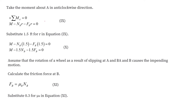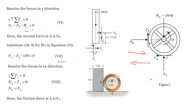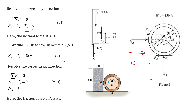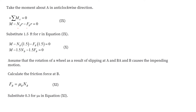Now taking the moment about point A in the anticlockwise direction. Considering anticlockwise moments as positive and clockwise as negative: the applied moment M minus Nb·R — the moment due to Nb at point A is clockwise — and the moment due to friction force Fb is also clockwise. From this we get a relation between the moment M, the normal reaction Nb, and the friction force Fb. We name this equation 10.